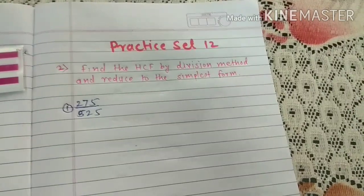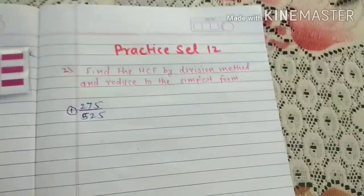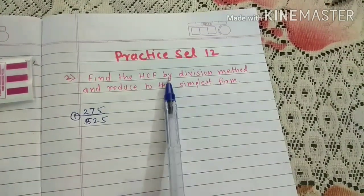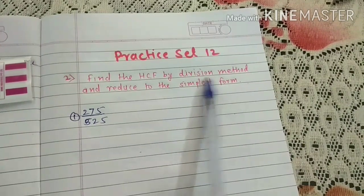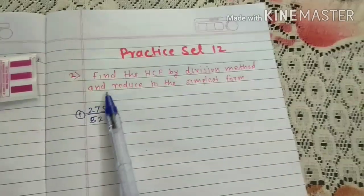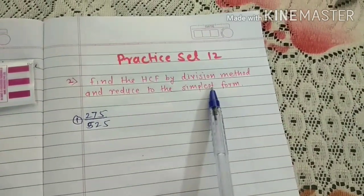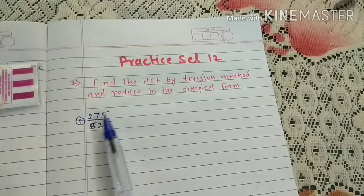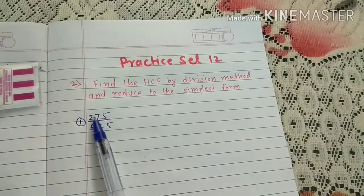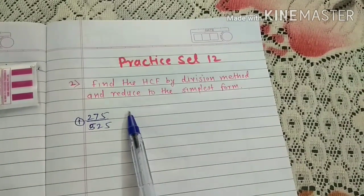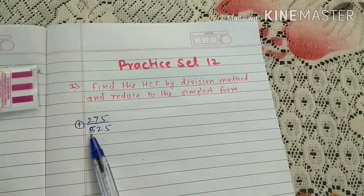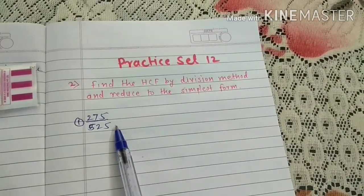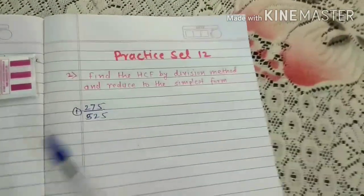Practice set 12, question number 2 - find the HCF by division method and reduce to the simplest form. Example 1: 275 upon 525.